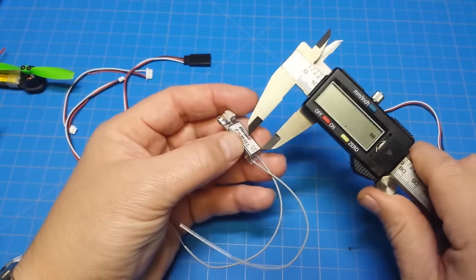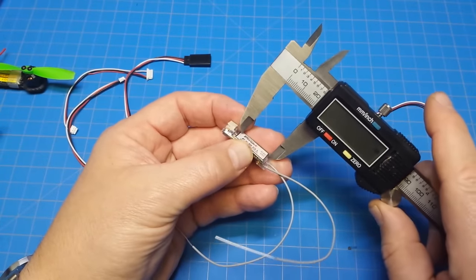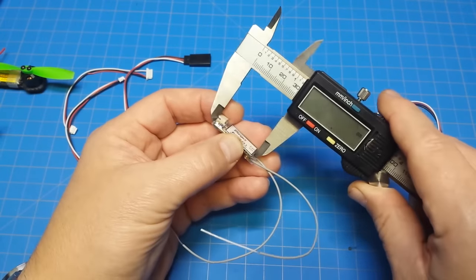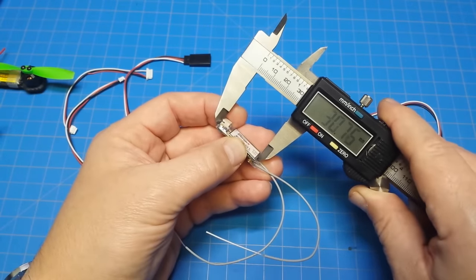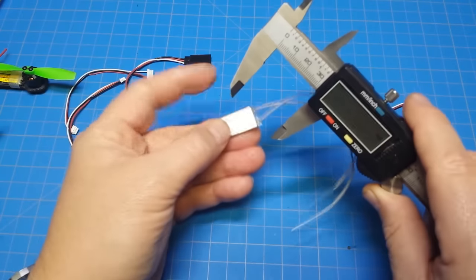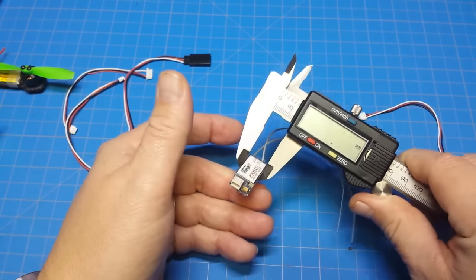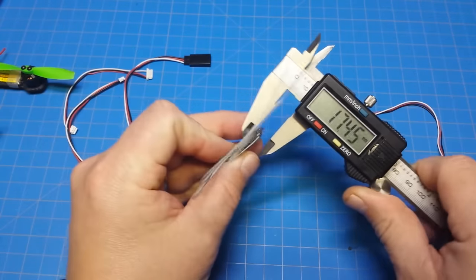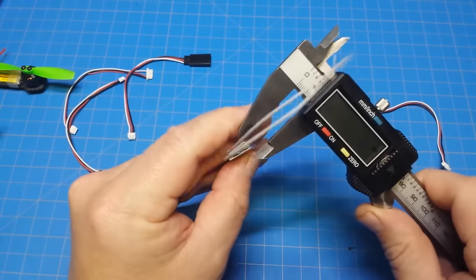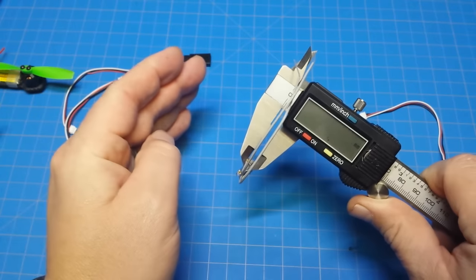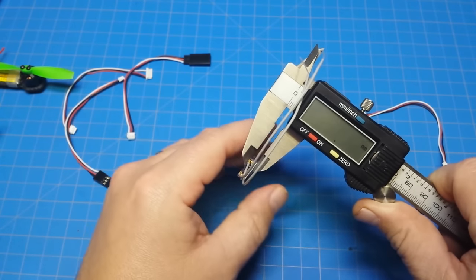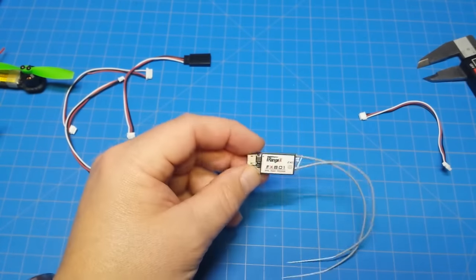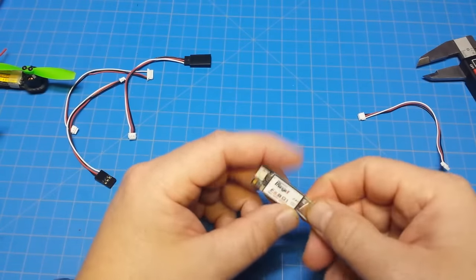And our length, if we don't include the plastic part down there, the heat shrink that extends past, we try to just measure the actual piece. We've got 30.7, and then our width, we've got 13.2, and our depth, let's go up here where the UFL connector is. That's the thickest part, 4.7. So 3 grams and pretty slim and small. You could squeeze that in any one of the quads I just showed you. Pretty good solution there.